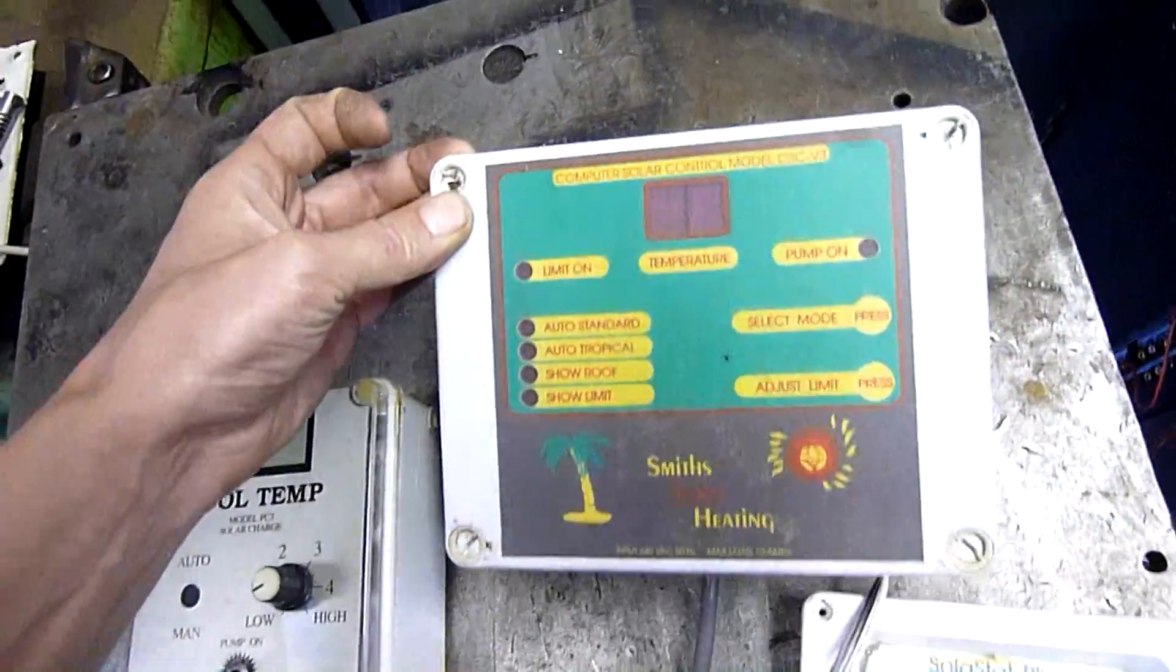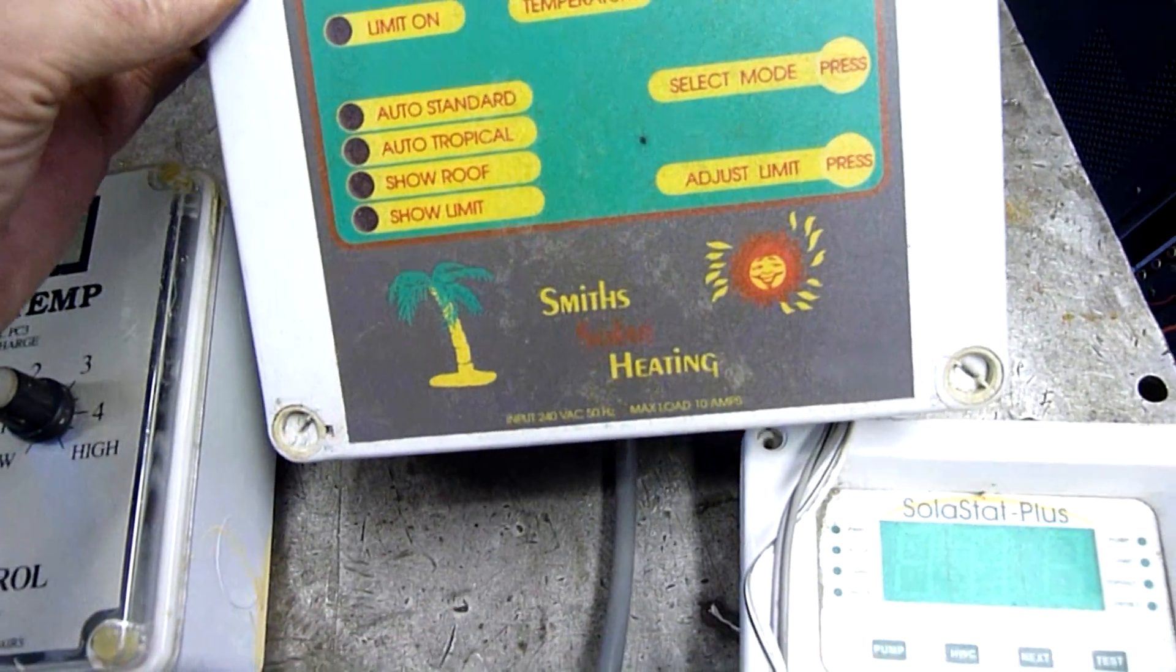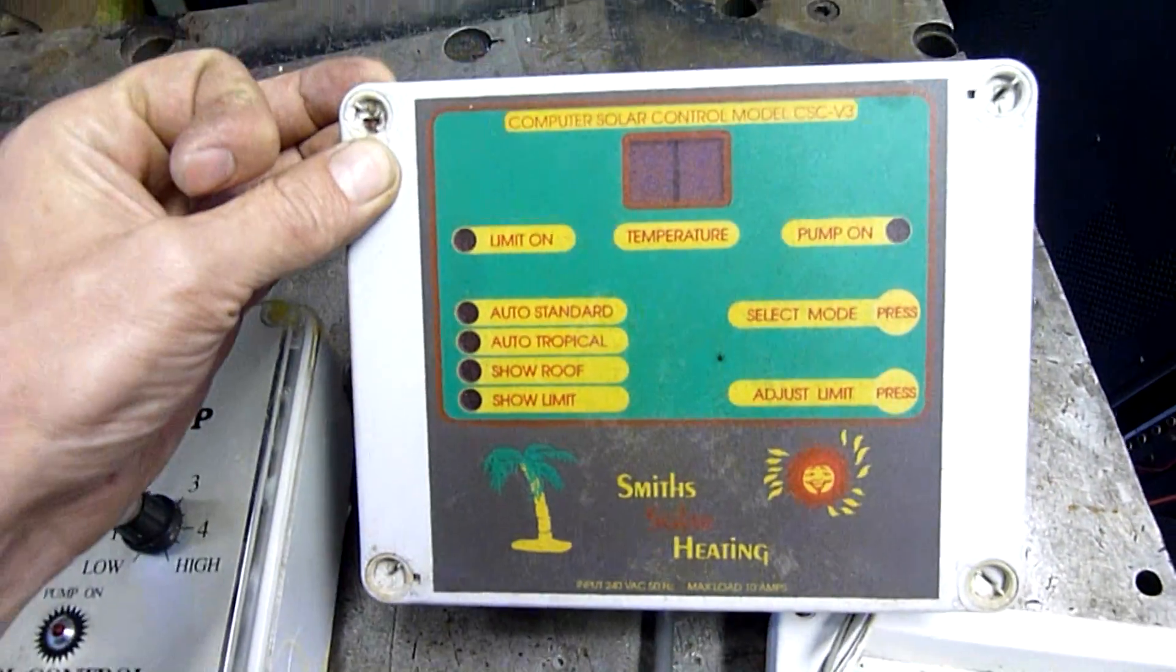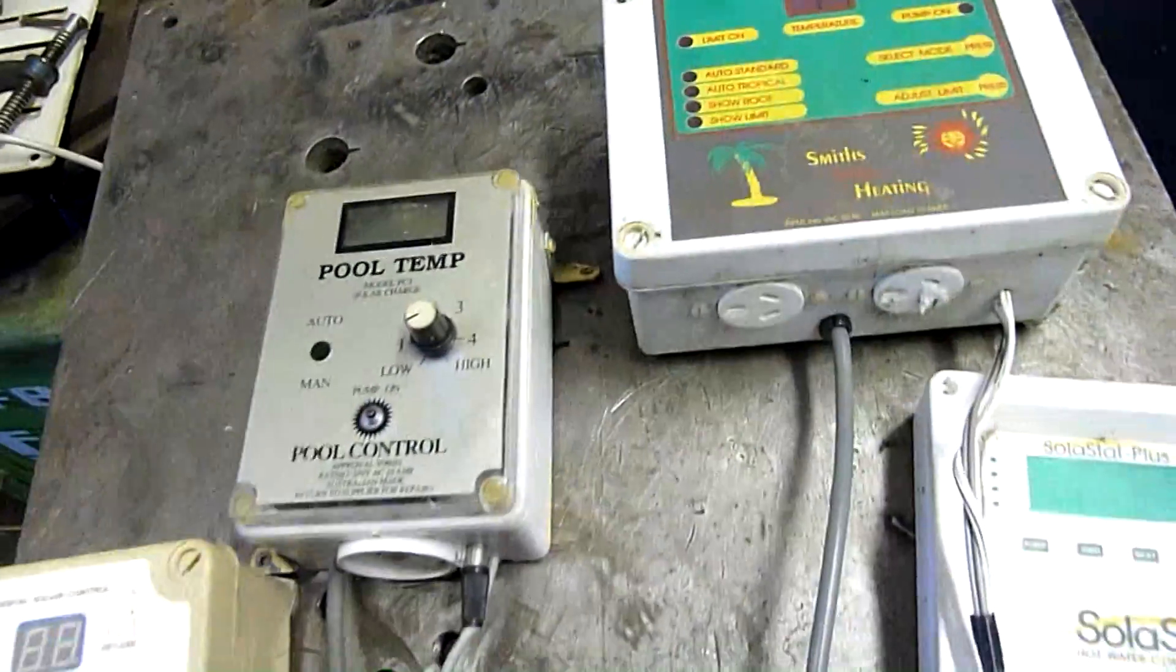That one there, I've got no idea who makes the electronics, we're going to find out. It's for Smith Solar Heating. Same sort of deal, you've got your high and low. They're all temperature differential switches.